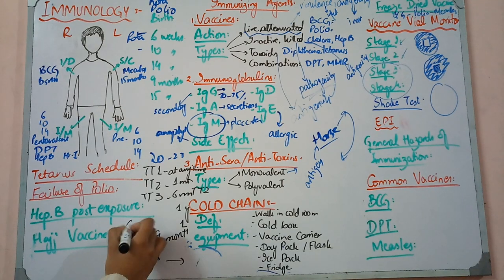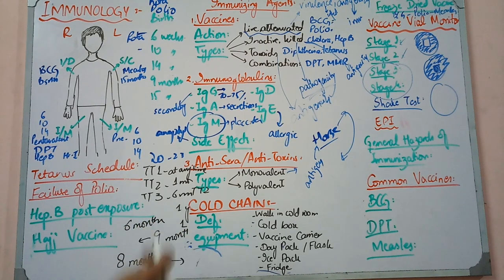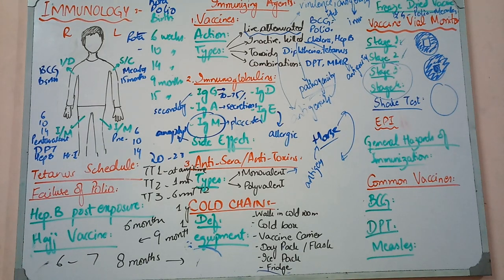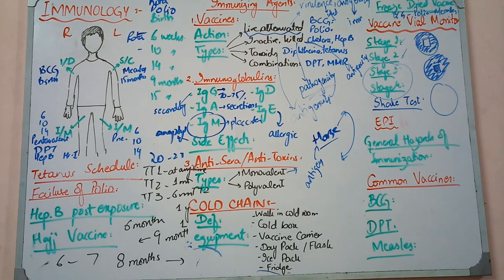If a pregnant woman is at 6 months, you will give 2 injections one month apart - at 6 months and then at 7 months. So you can give 2 injections to this pregnant woman. But remember, the last injection must not be within one month of delivery. You have to remember the schedule of tetanus.